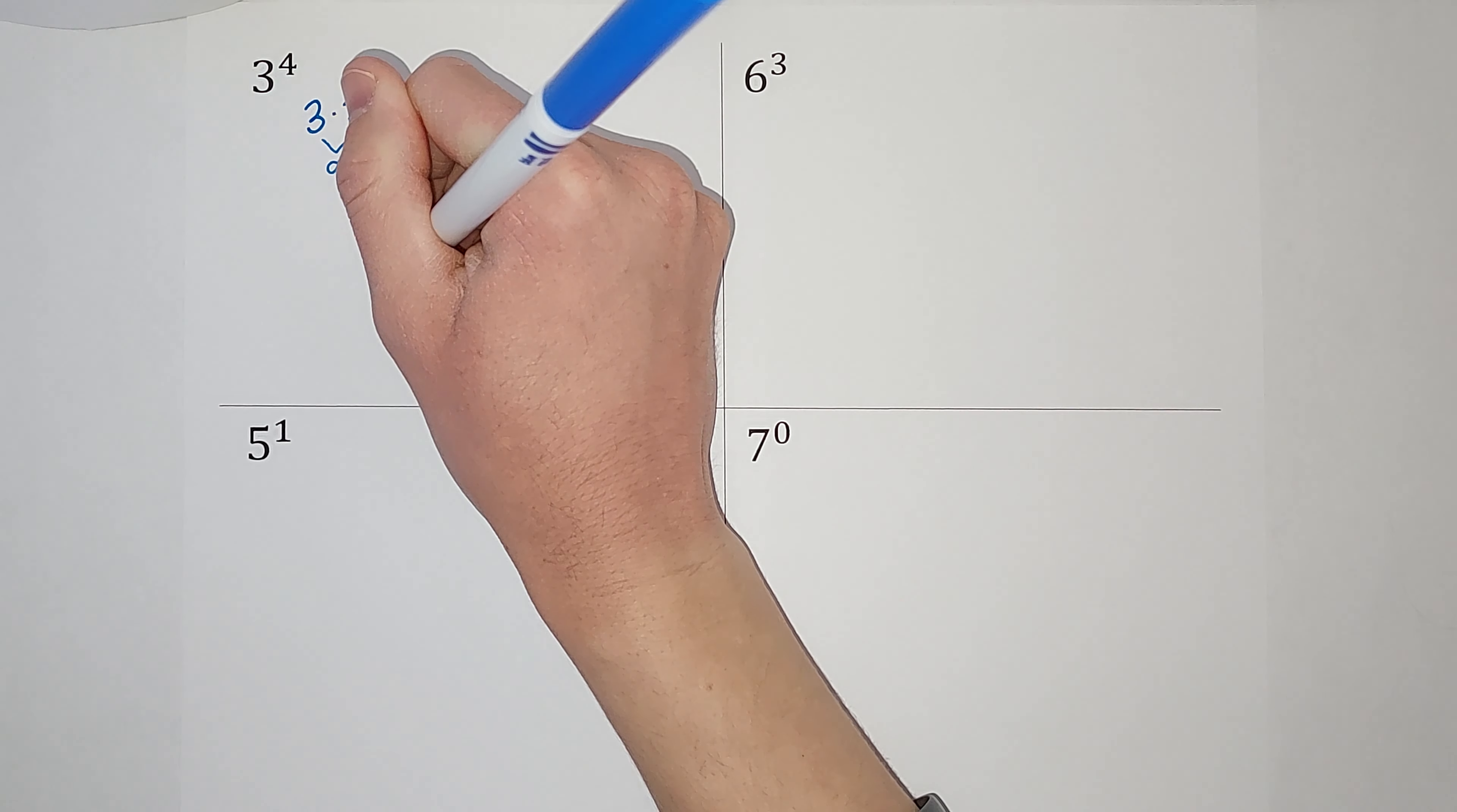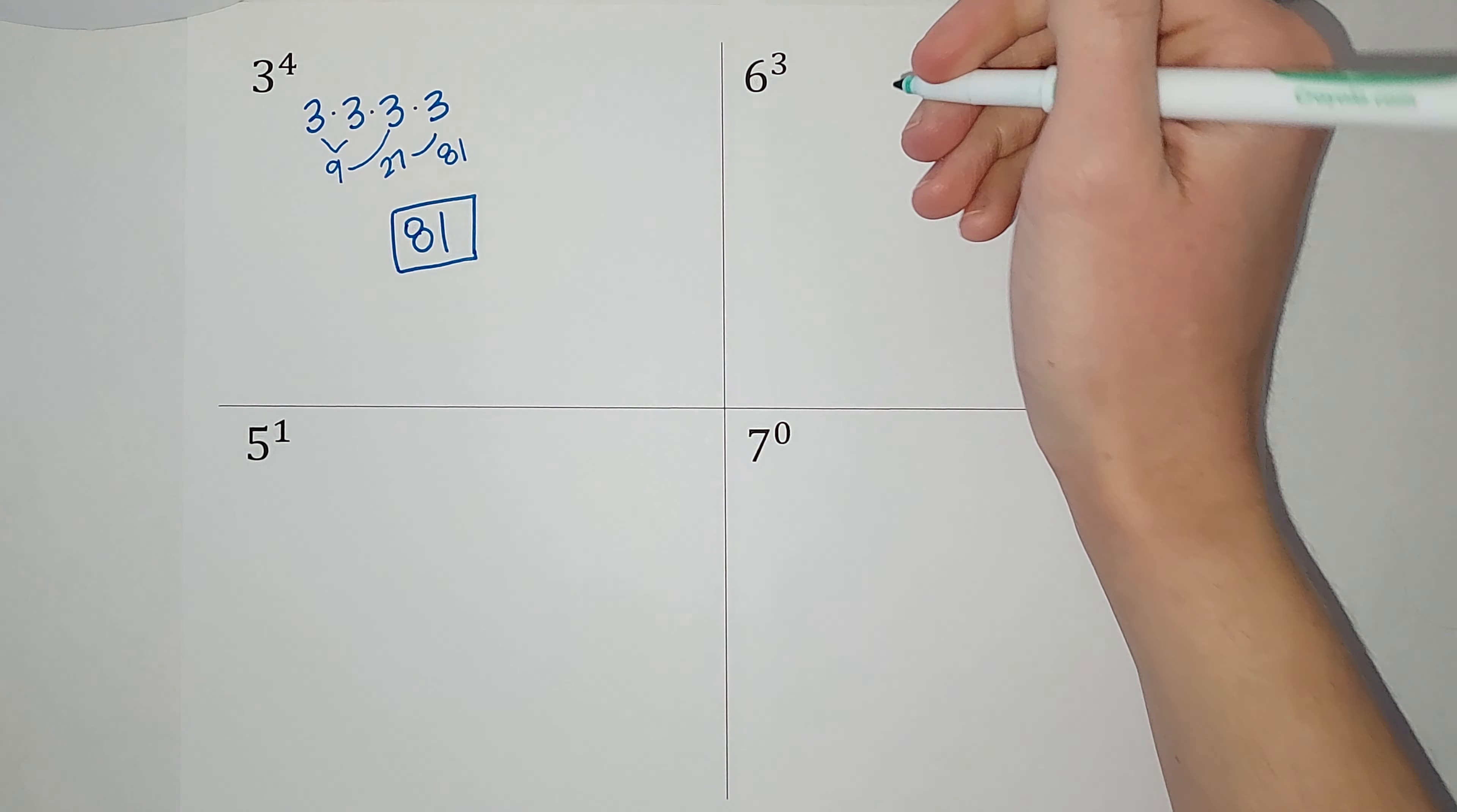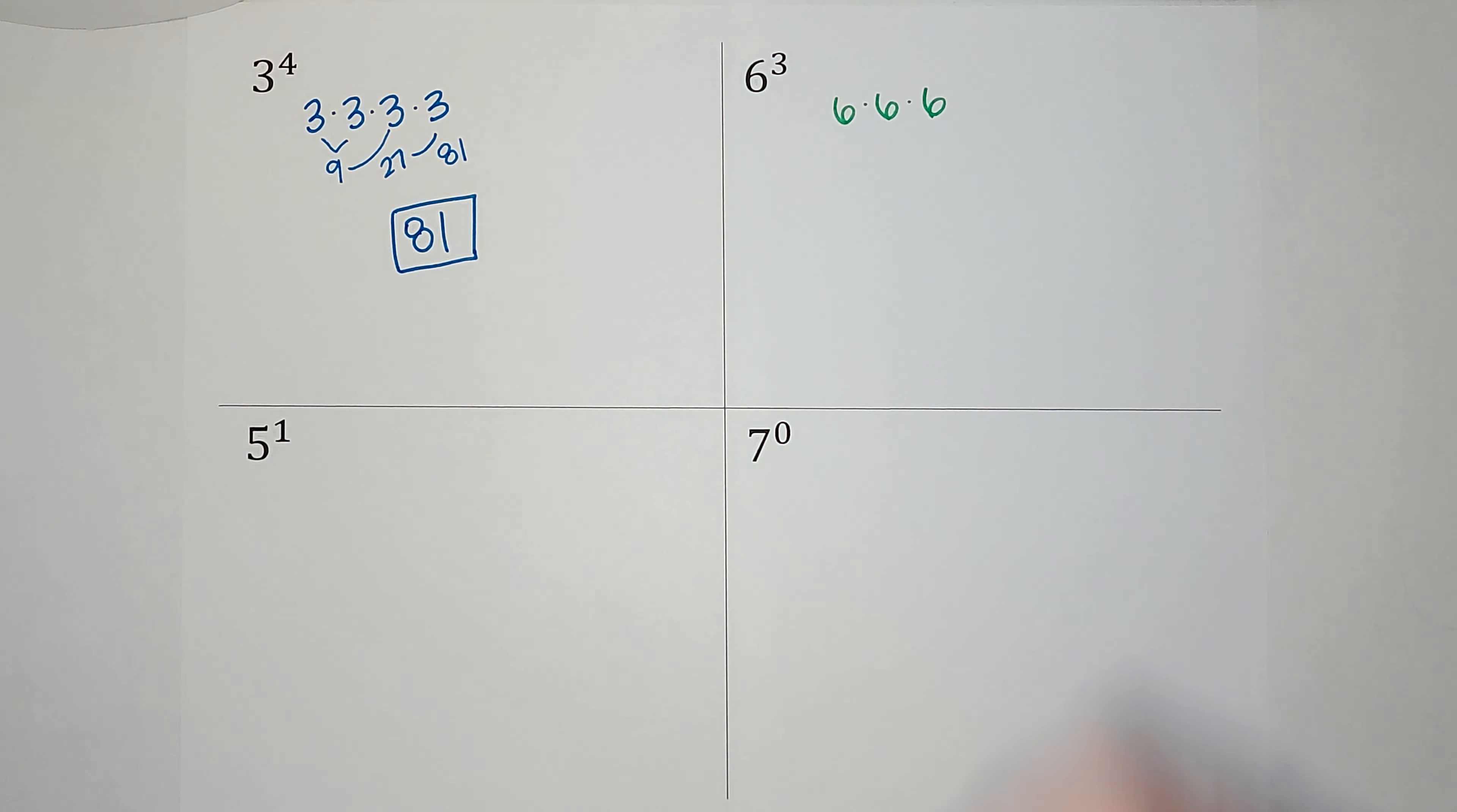Let's look at this one. Six to the third power, or you'll also hear it said six cubed. This is not six times three. It is six times six times six. Three sixes multiplied together.